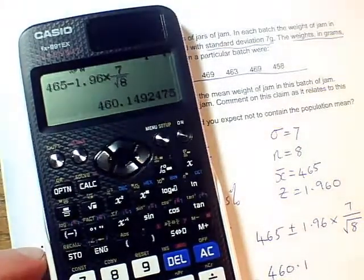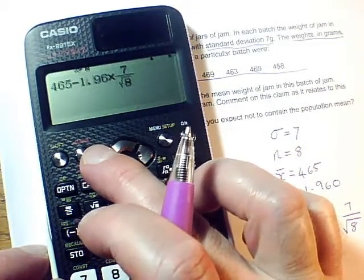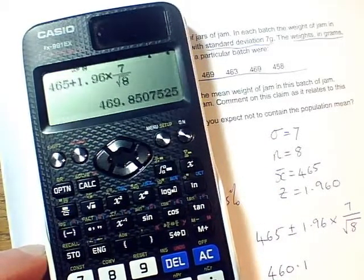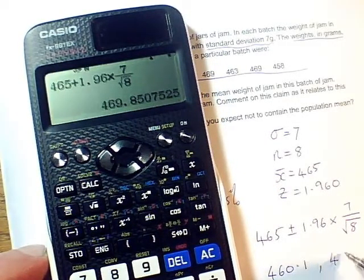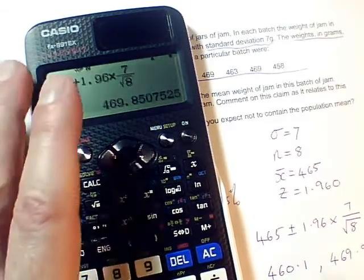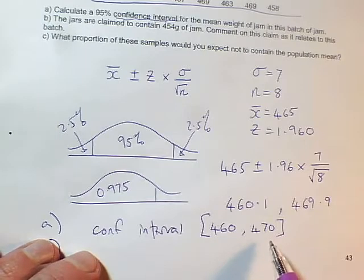Does it give me a particular limit? No, it doesn't give me a degree of accuracy to go for. I'm happy with that. And then for the other one, I need to add on instead of taking away. So I can change that to a plus. And I get 469.85, so that's 469.9. So my confidence interval, I'm going to round to three significant figures at this point.